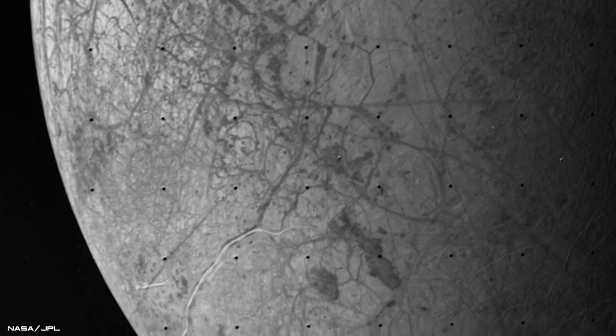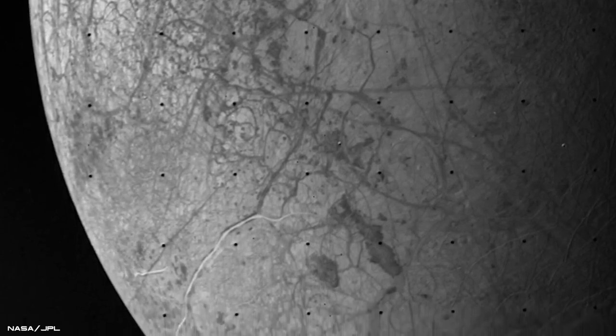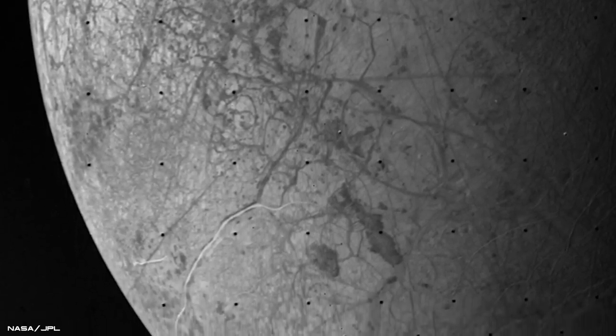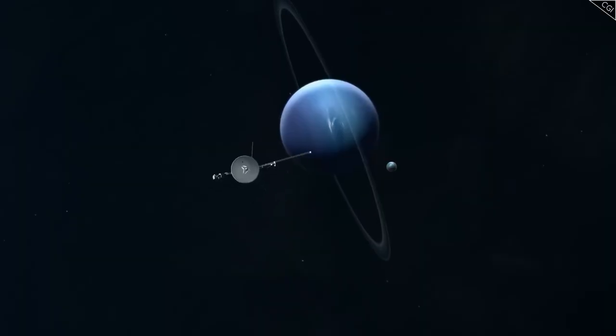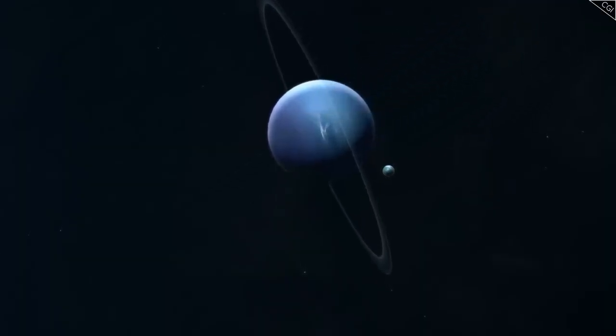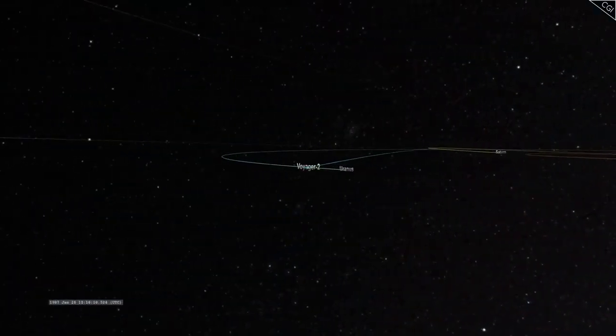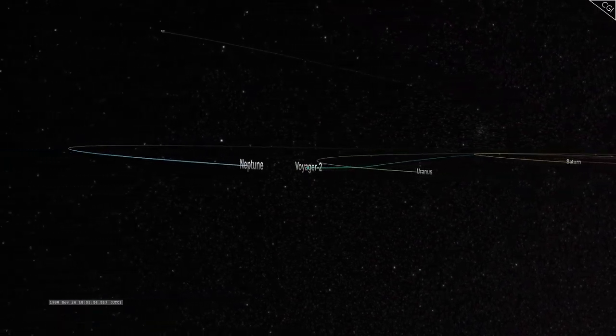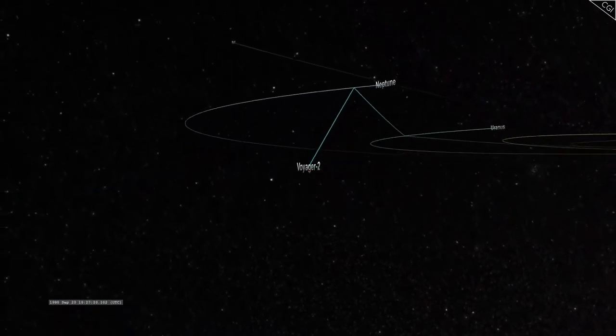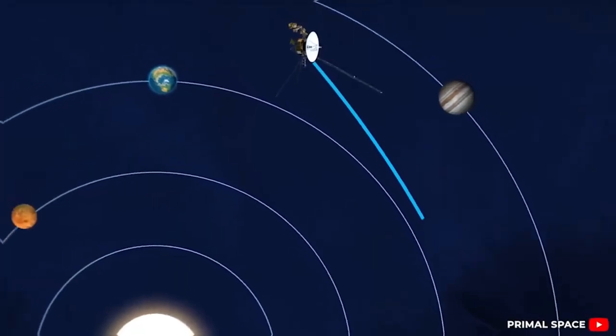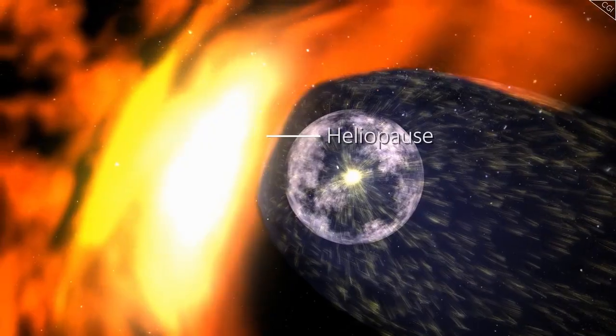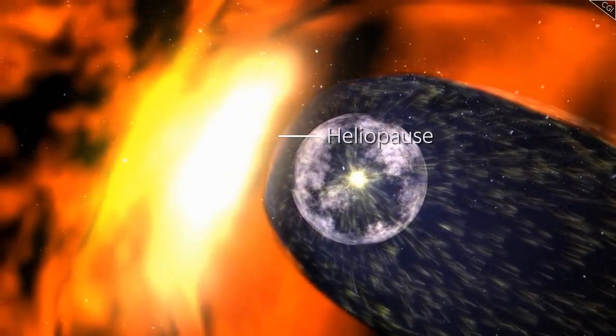As of January 2024, Voyager 1 is approximately 14.9 billion miles, 158 times Earth's distance from the Sun, from our planet, making it the farthest human-made object in space. Voyager 2 achieved a major milestone in November 2018, becoming only the second spacecraft to enter interstellar space following Voyager 1's breakthrough in August 2012.